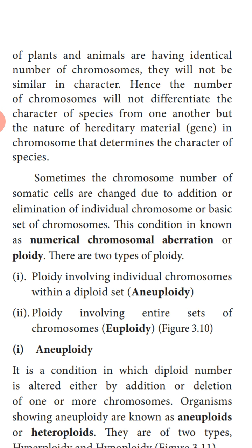Change in chromosome number can be by addition or removal of one chromosome or a haploid set of chromosomes. This haploid set is called the basic set. For example, human beings have 46 chromosomes — 23 is the haploid number and 23 is the basic set. This condition is known as numerical chromosomal aberration, or it is also called ploidy.